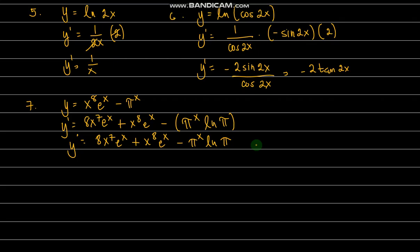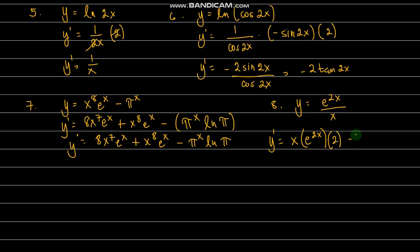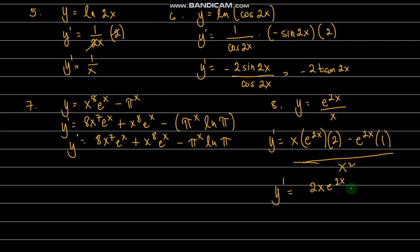What if we have y equals e to the 2x over x? Here we use the quotient rule. So y prime equals x times the derivative of e to the 2x, which is 2e to the 2x, minus e to the 2x times the derivative of x, which is 1, all over x squared. So y prime equals 2x e to the 2x minus e to the 2x over x squared. That's how to differentiate exponential and logarithmic functions.